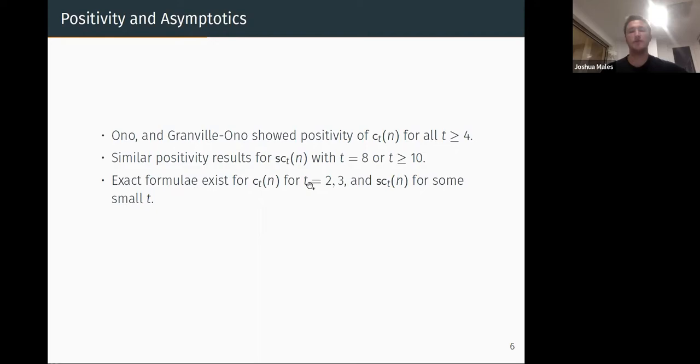How many? Well, exact formulas are known for t equals 2 and 3 for CT and SCT for some small t. So here, I think 2, 3, 5, and possibly 6. What else do we know? We know asymptotics via the circle method, both CT and SCT. So this is by a paper of Anderson and a paper of Albuquerque. So we know vaguely how these things grow.